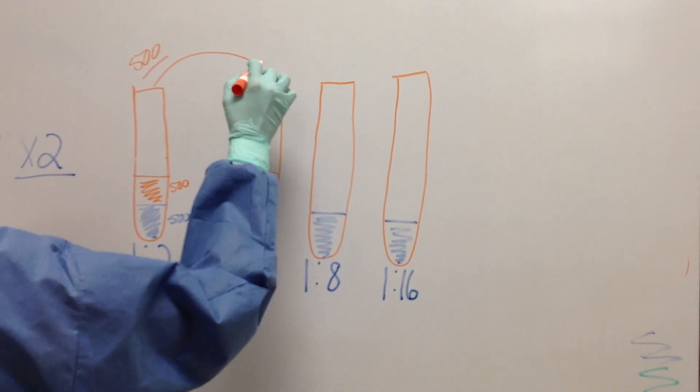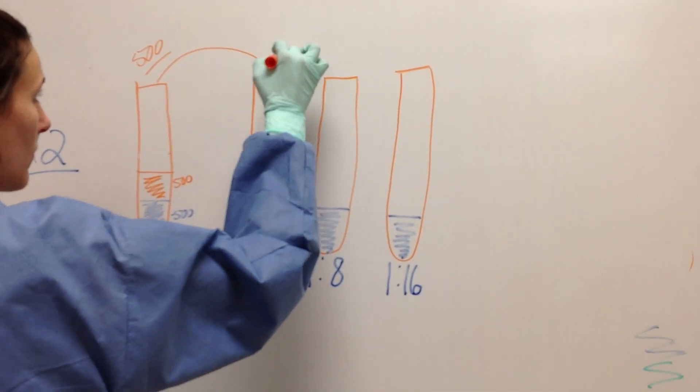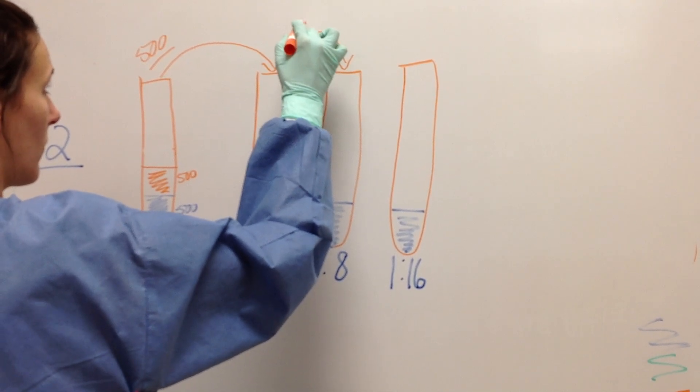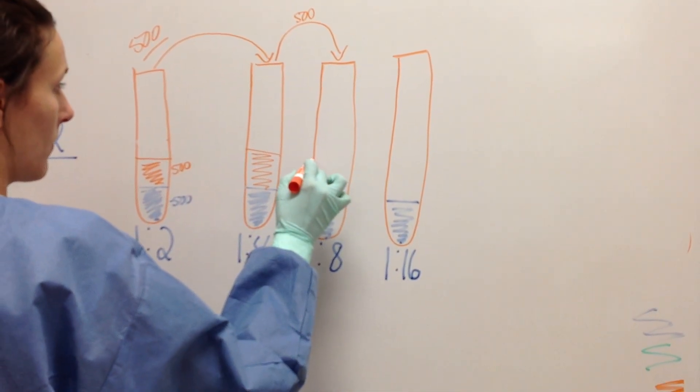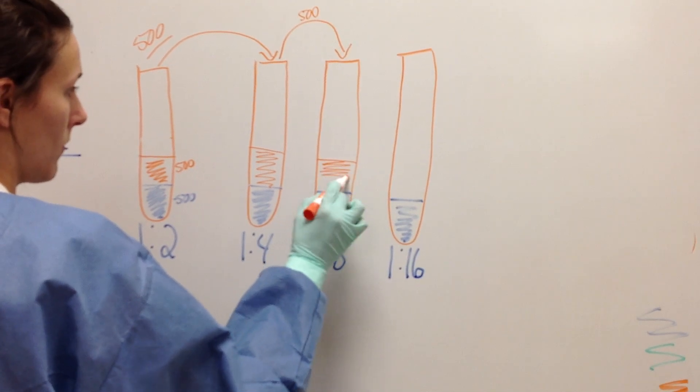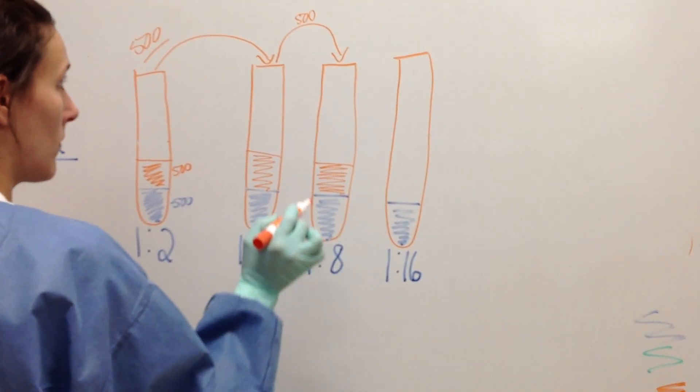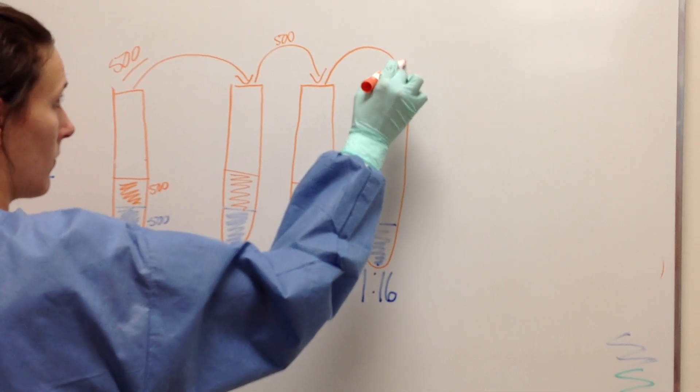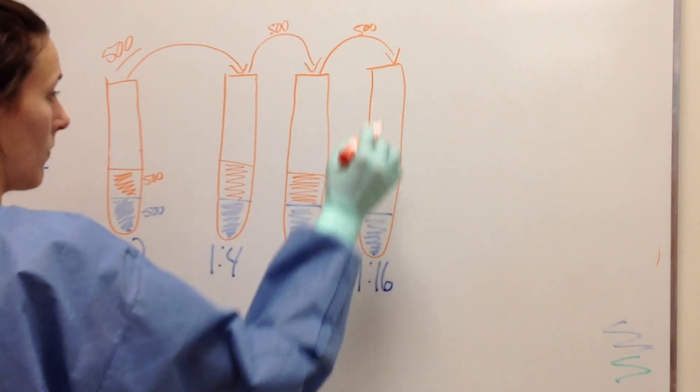Mix and then aspirate the same amount, 500, into the third tube. Be sure to mix. Take out 500 from tube 3. Put into tube 4.